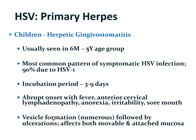Herpes simplex virus infections are included in the differential diagnosis of vesicular bullous lesions involving the oral cavity. The others include mucous membrane pemphigoid, pemphigus, bullous pemphigoid, bullous lichen planus, erythema multiforme, etc. So remember, herpes simplex is one of the vesicular bullous lesions.